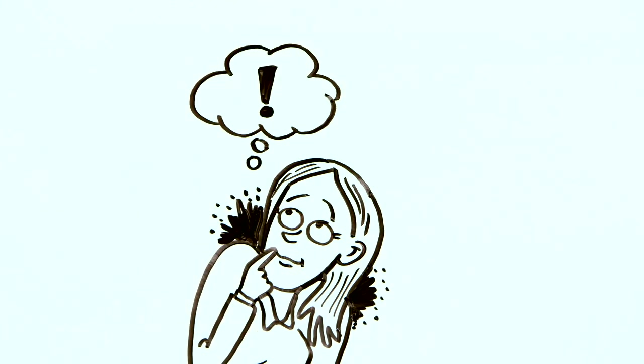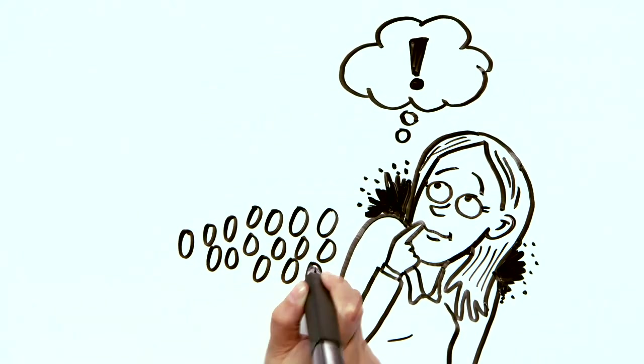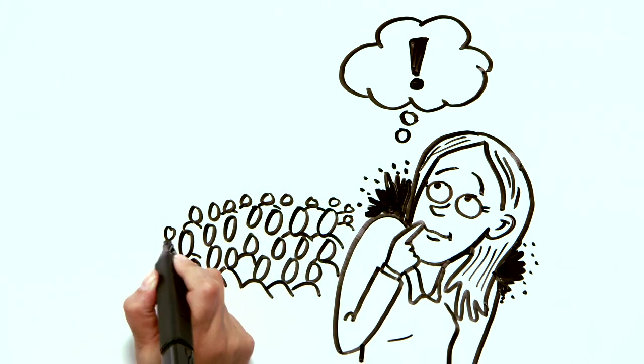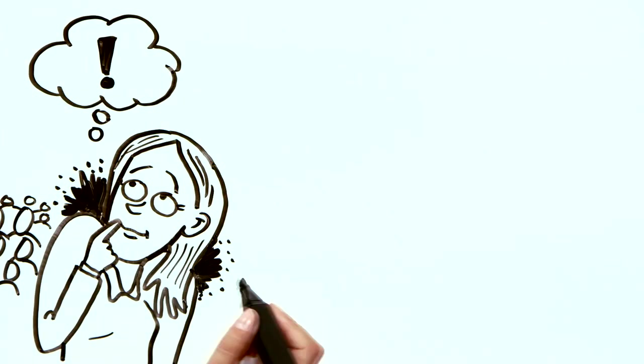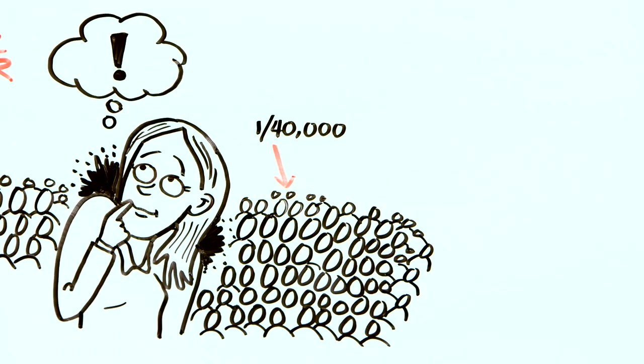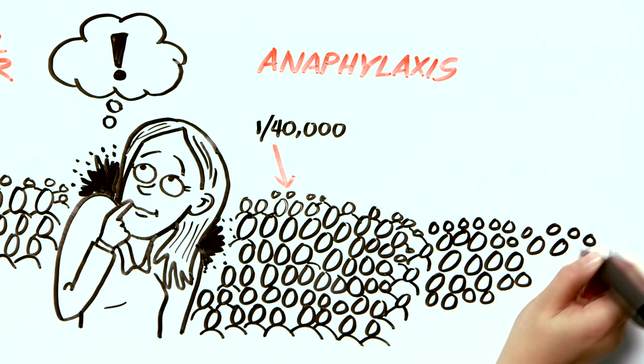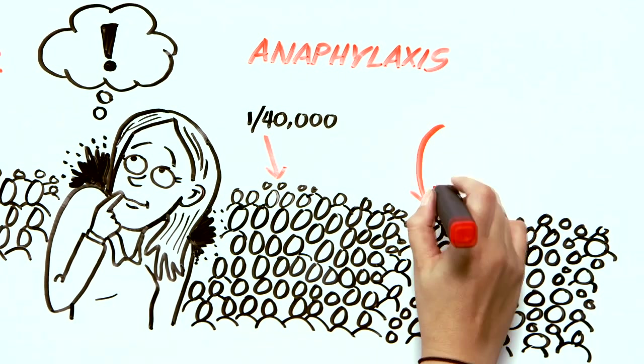Numbers help some people make decisions. The two contrasting numbers that stick out for me are significantly reducing your 1 in 150 chance of getting cervical cancer, versus a 1 in about 40,000 chance of anaphylaxis. Other datasets put the anaphylaxis rates as rare as 1 in a million.